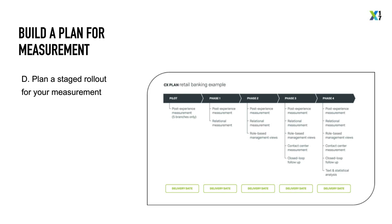The next step is to create a staged rollout plan that helps internal stakeholders understand where you plan to begin and the expected milestones for each phase. Phase one should focus on only one or two touchpoints, allowing you to prove the concept early, make adjustments, and build momentum. Using a retail banking example, the first step may be a pilot where you focus on collecting post-transaction feedback at a select group of branches. Phase two may roll out that same measurement to more branches and add relational measurement, not just capturing feedback on a specific branch experience but also beginning to capture relational measurement for key customers.